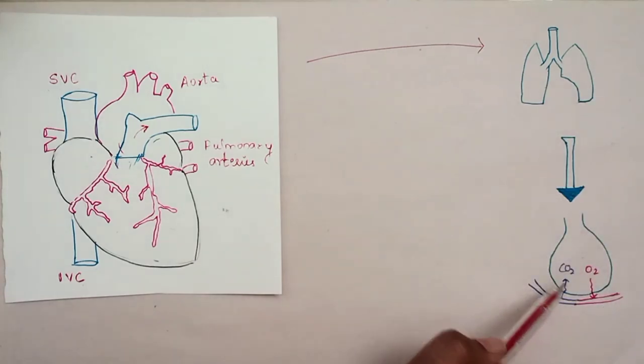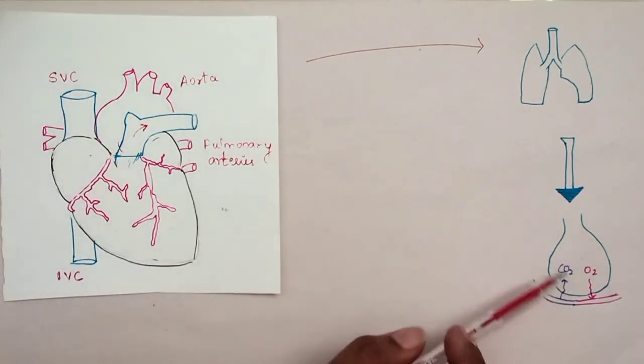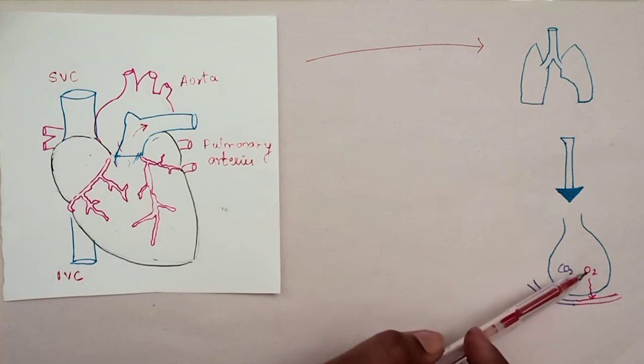In the lungs, alveolar structures are responsible for gas exchange. Carbon dioxide is expelled during expiration, and oxygen is absorbed into the capillaries.